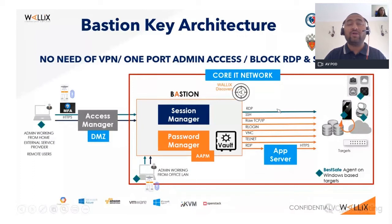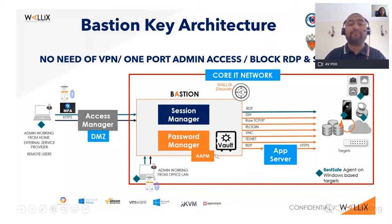We also support something called the invisible mode — also called transparent mode — wherein the user won't even know a PAM solution is in place. Today, if you have 10 users needing access to an RDP server, you need port 3389 open from end user machines to target devices, which is a vulnerable port prone to attacks. It is recommended by Gartner and Forrester that you should not open direct ports. With Bastion in place as a man-in-the-middle, you only need to open port 443 — a secured port — from your end user machine to the Bastion.